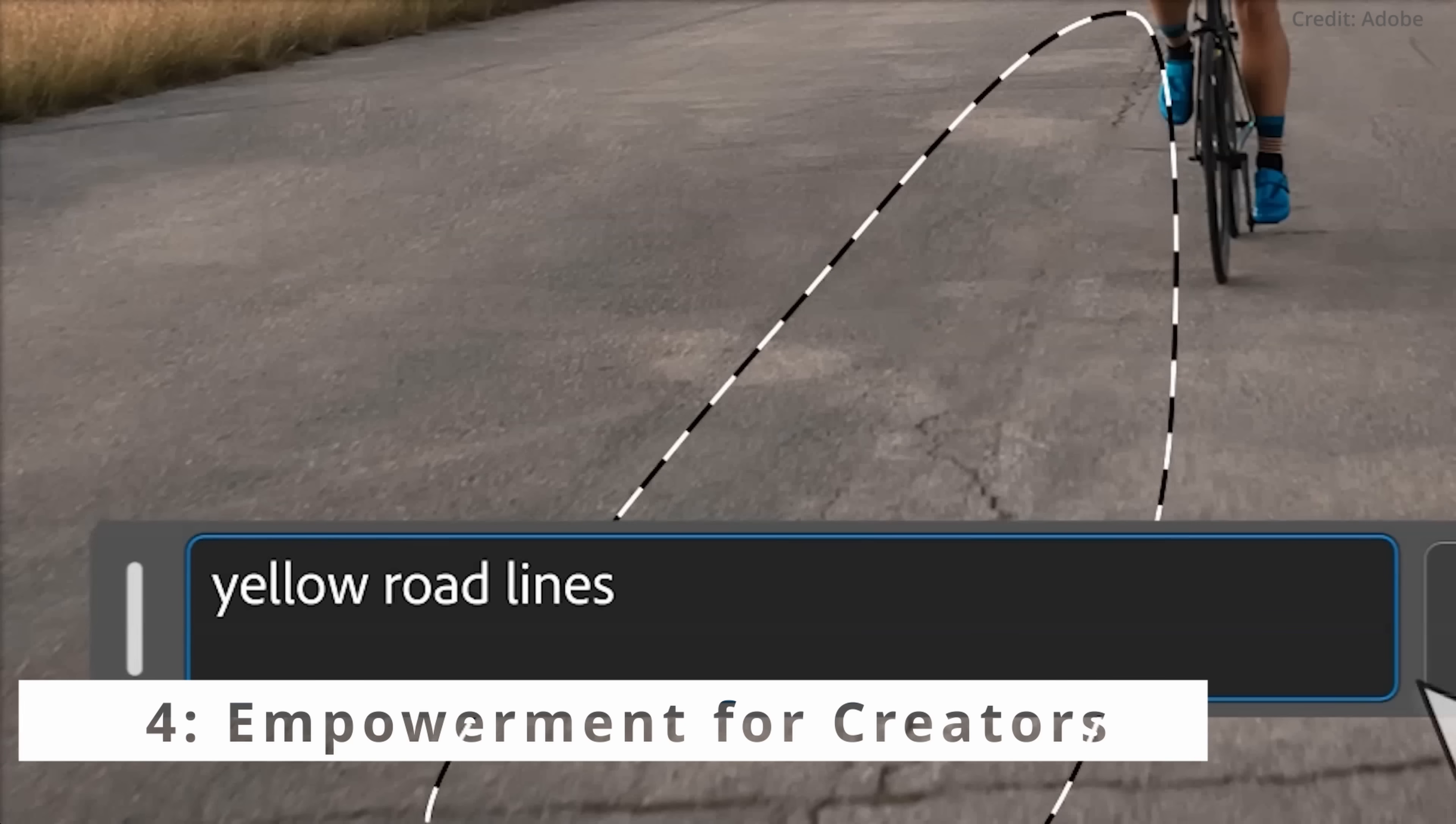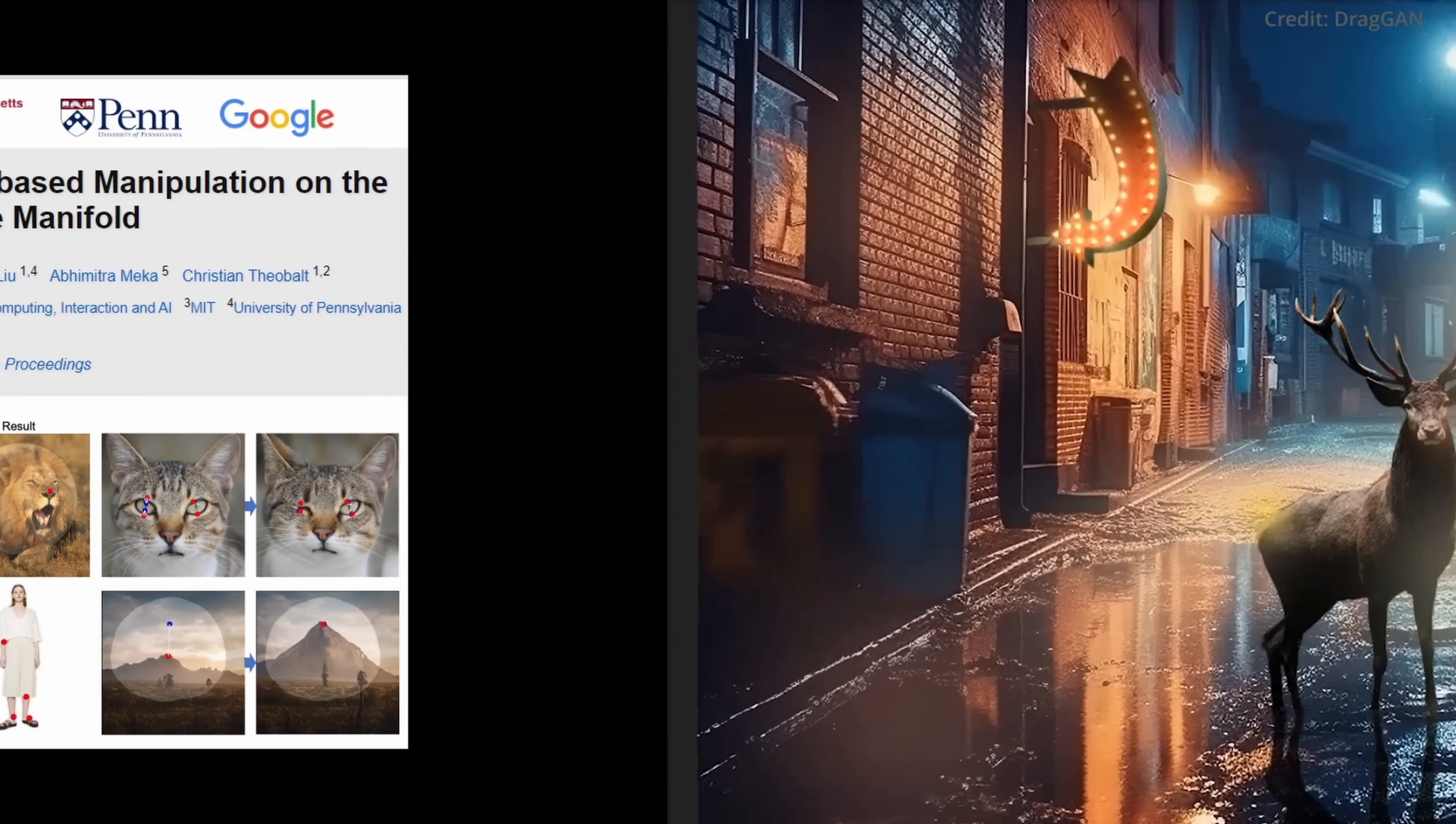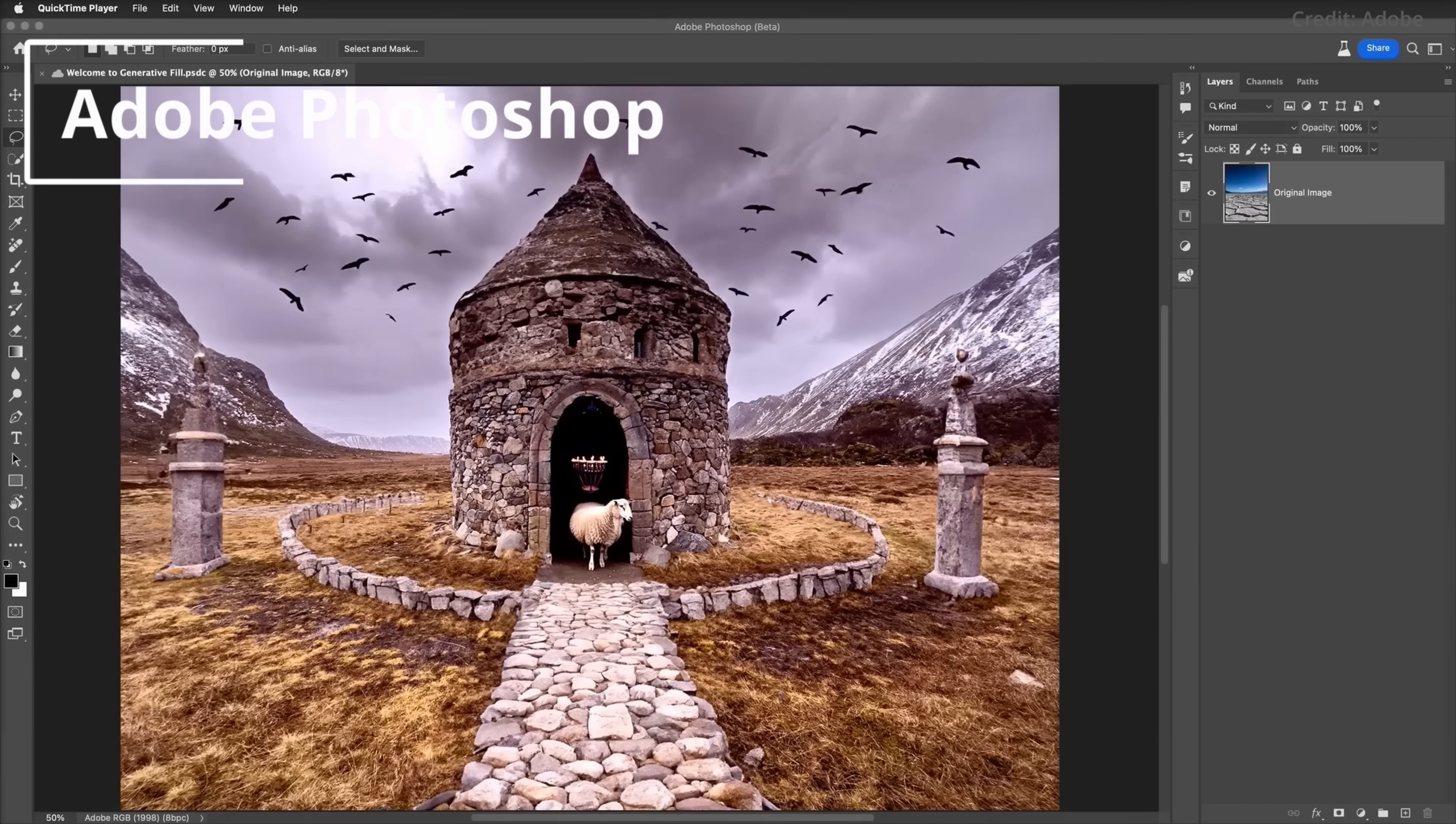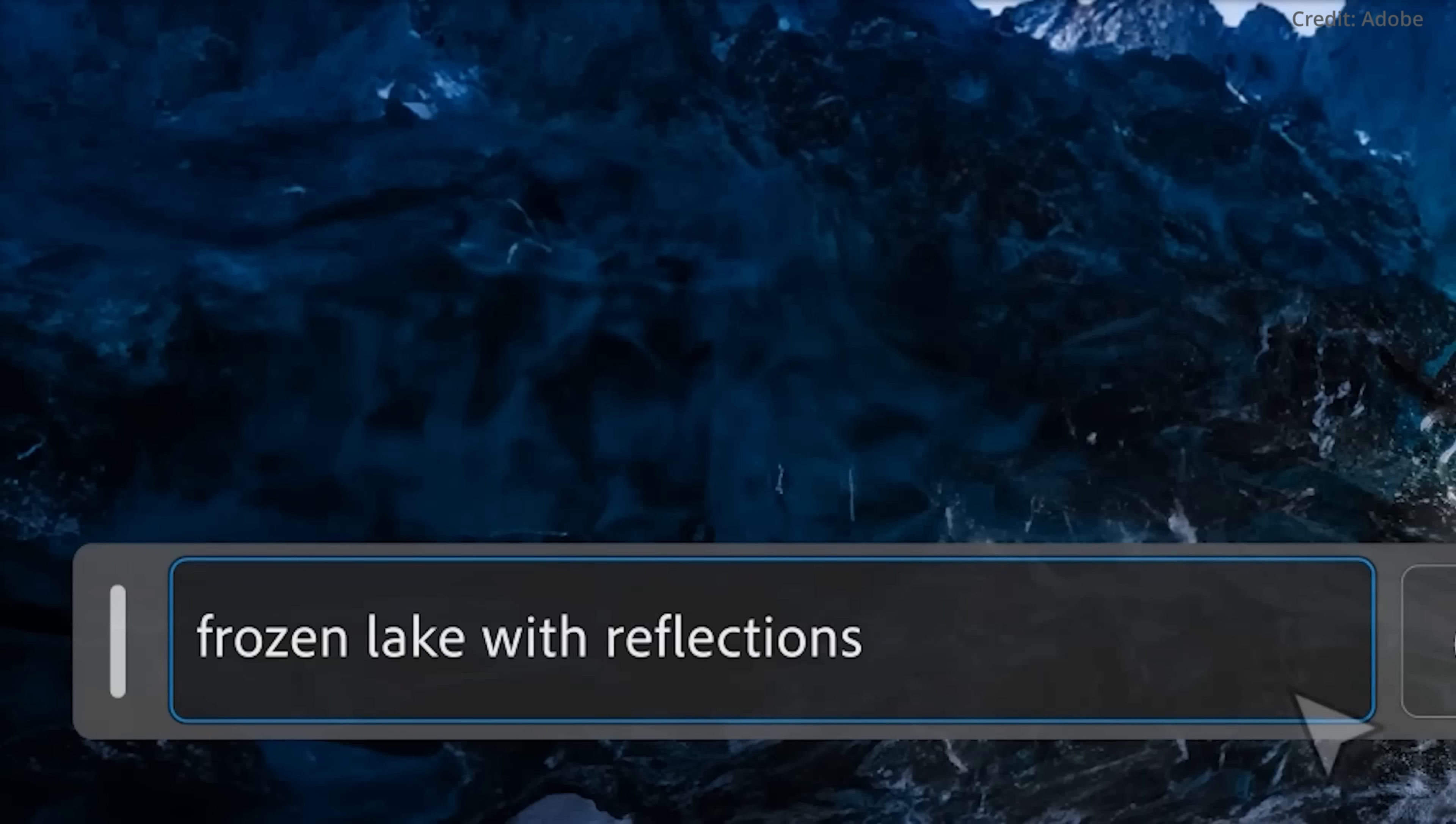Number four, empowerment for creators. Adobe continues to empower creators by setting the stage for more accurate AI image generation. It borrows ideas from research projects like DragGAN and tools like Meta's Make a Scene, showing that precision in AI image generation isn't just a distant concept, but a reality. When integrated into popular tools like Photoshop, it signals the dawn of a new era of digital design, taking Adobe's AI from the lab to the hands of designers worldwide.